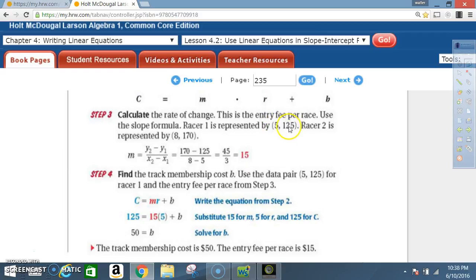Now we can use this value or this value, but we're choosing to use this value, 5 and 125. So C is 125 and R is 5. So we do our math. 125 equals 15 times 5 plus B, and we end up with B equals 50.